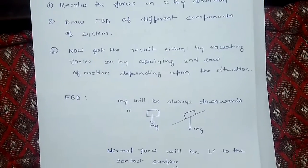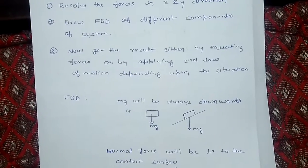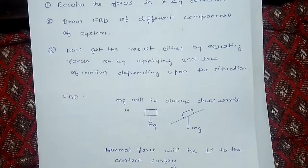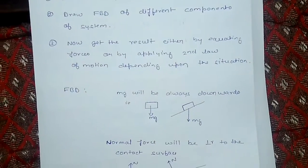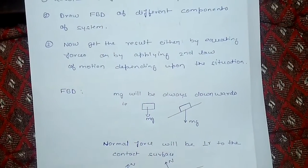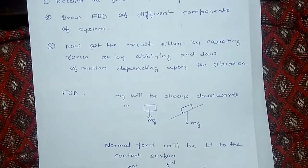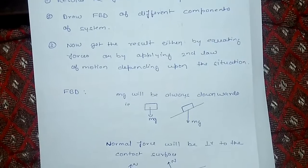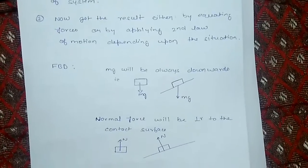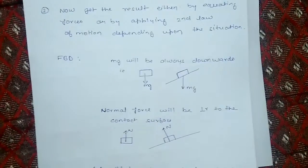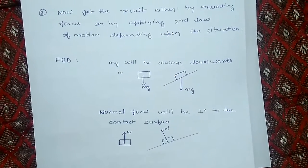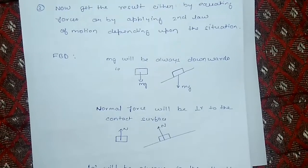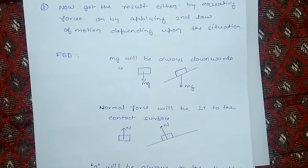For the free body diagram, always remember mg will be acting downwards. Two examples are given as follows. Normal forces will be perpendicular to the contact surface. For more, see the examples.